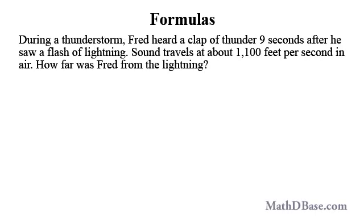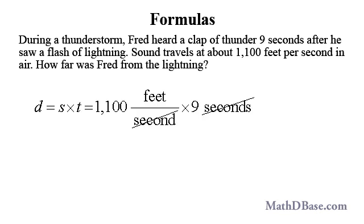As a last example, during a thunderstorm, Fred heard a clap of thunder nine seconds after he saw a flash of lightning. Given that sound travels at about 1,100 feet per second in air, how far was Fred from the lightning? Using the speed-distance-time formula arranged to solve for distance, distance equals speed times time. Substituting, 1,100 feet per second times nine seconds equals 9,900 feet.